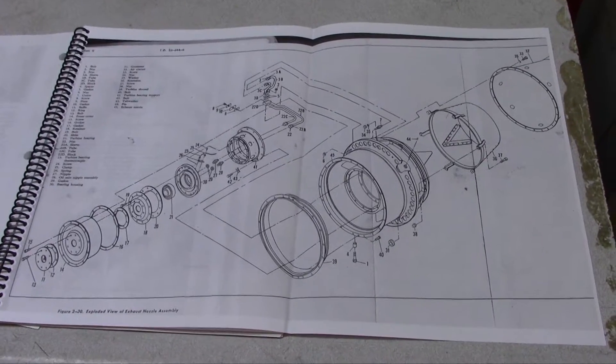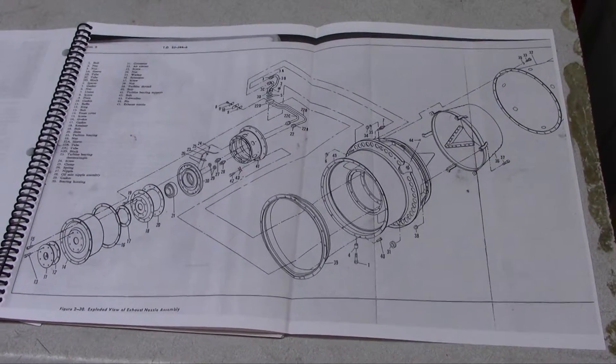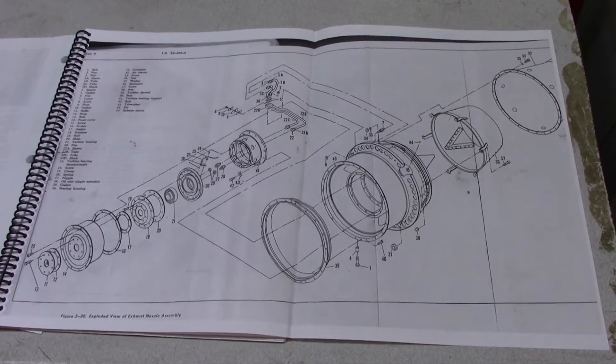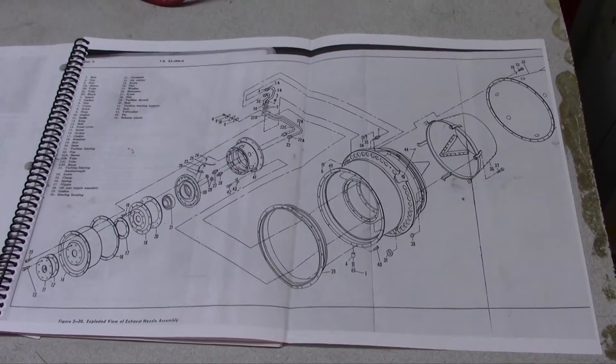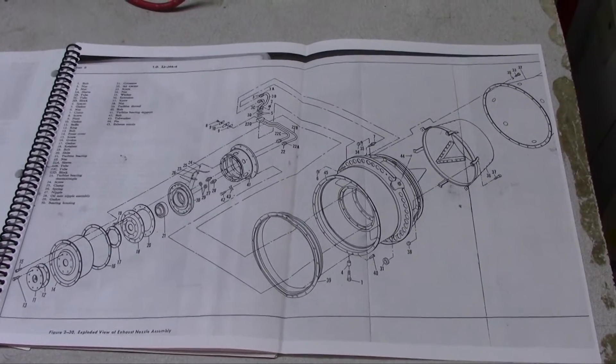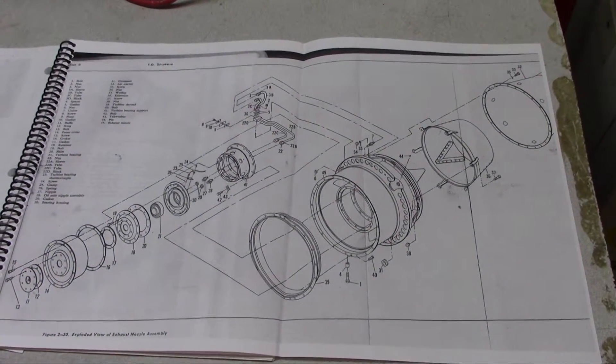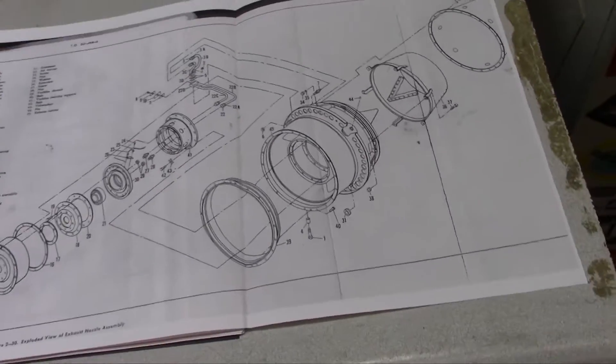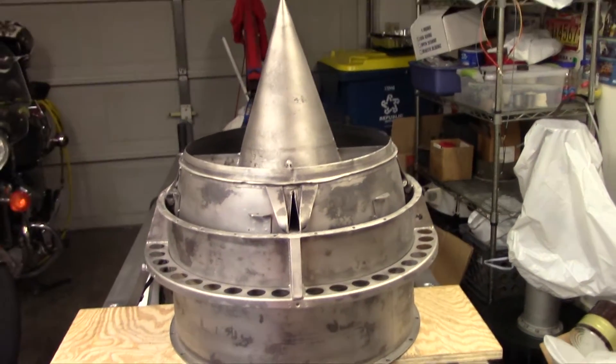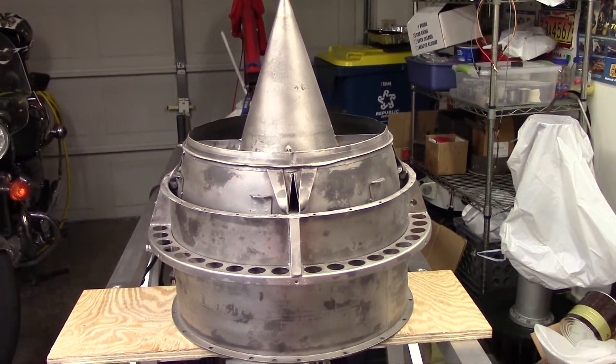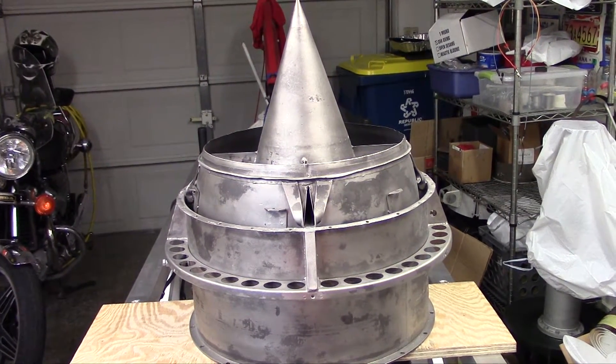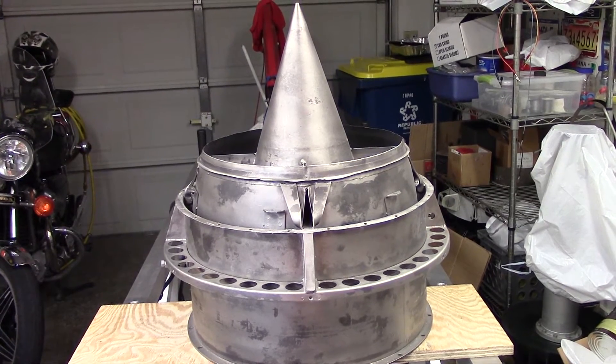Here is an exploded view of the exhaust nozzle assembly, which includes the turbine rear bearing and the exhaust nozzle itself. We're going to look at that in real life and get to proper terms. This is the original J44 R24 exhaust nozzle housing.